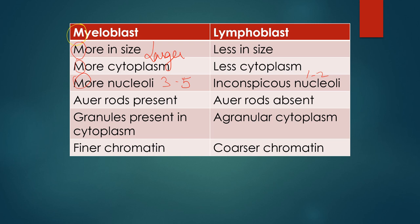Next is the presence of Auer rods in a myeloblast. If Auer rods are present in your case, you can easily identify the cell as a myeloblast, whereas Auer rods are not present in a lymphoblast. More granules — granular cytoplasm is a feature of myeloblast, whereas in a lymphoblast, very thin scant cytoplasm is present and that too is agranular.